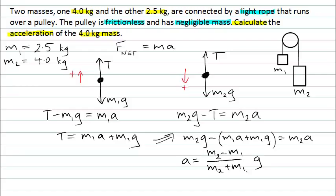And now I'm almost at my answer, because I know the values for all of these quantities. I know that m2 is 4 and m1 is 2.5. So I can divide that by 4 plus 2.5 multiplied by 9.8. And I will do that on my calculator and get a number of 2.3 meters per second squared.